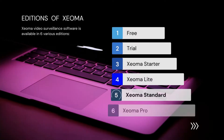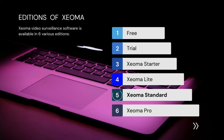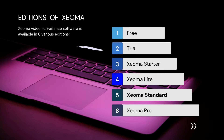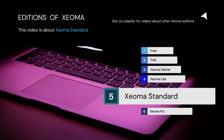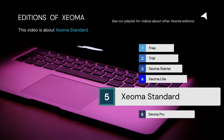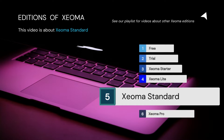Editions of Xeoma. Xeoma Video Surveillance Software is available in six various editions: Free, Trial, Xeoma Starter, Xeoma Lite, Xeoma Standard, and Xeoma Pro. In this video we will tell you more about Xeoma Standard. For videos about other Xeoma editions, please see our playlist.